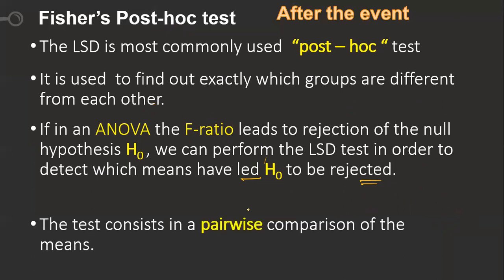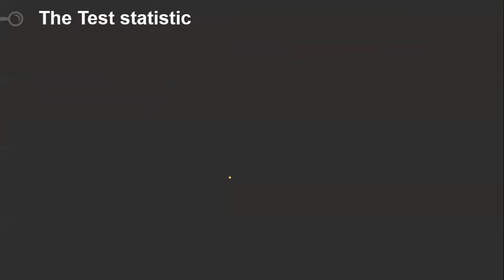The test consists of pairwise comparisons. For example, with groups G1, G2, G3: first I'm comparing G1 with G2, then G1 with G3, then G2 with G3. Just like that, we are going to compare all three groups pairwise, and come to a conclusion about which pairs have a difference in means. Now, what is the test statistic formula we are going to use?